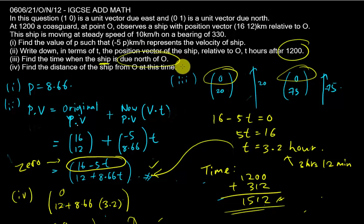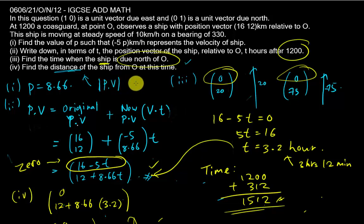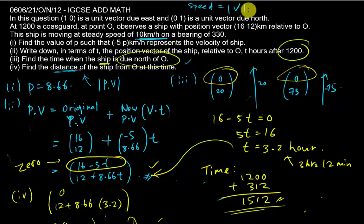To summarize the key concepts: whenever you see 'distance,' remember that means the magnitude of the position vector. Whenever you see 'speed,' remember that speed equals the magnitude of the velocity. I hope this video helps you understand this topic better — I'll make one or two more videos on this topic to make sure you fully understand it. Thanks for watching.